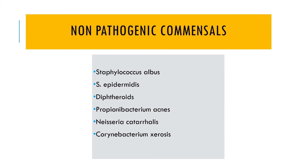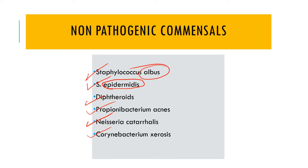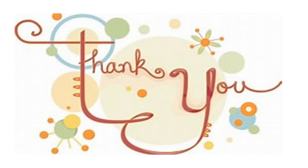The non-pathogenic organisms (commensals) living in the conjunctiva include Staphylococcus albus, Staphylococcus epidermidis, diphtheroids, Propionibacterium acnes, Neisseria catarrhalis, and Corynebacterium xerosis. These are the common commensals present in the conjunctival sac. That concludes the anatomy and some physiology of the conjunctiva.